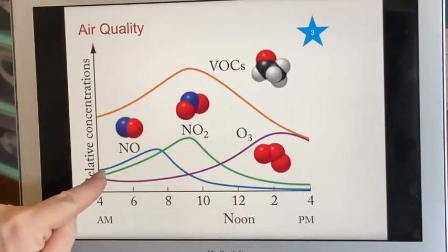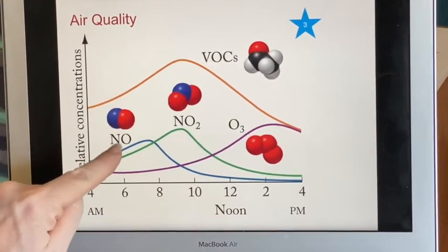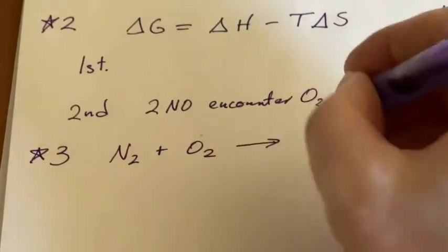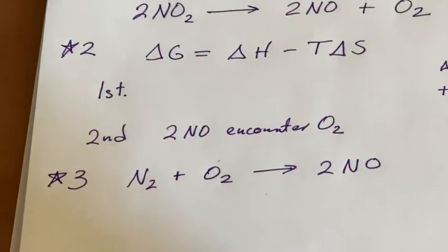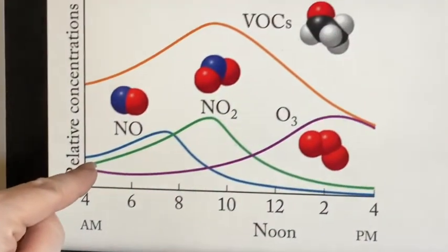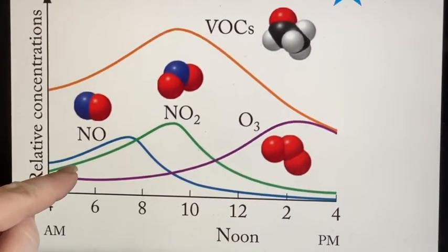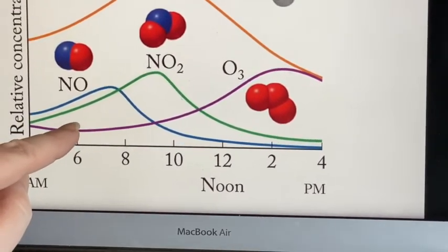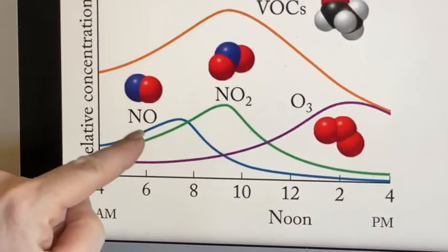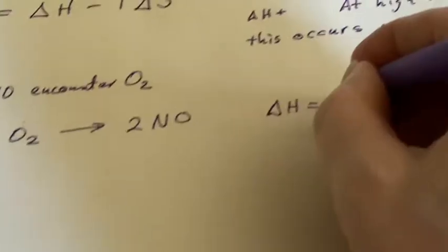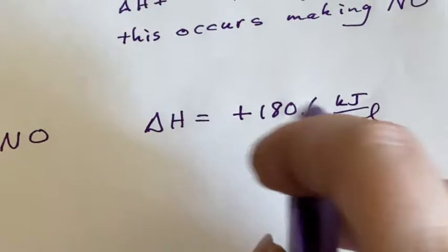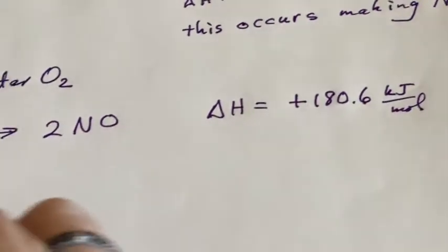So the very first one is the creation of the nitrogen monoxide. That was our first equation, where we were taking the nitrogen and the oxygen in the air and creating nitrogen monoxide. And this occurs because you have these hot car engines act as a surface that will transmit enough energy to the nitrogen and oxygen to make the nitrogen monoxide. Because remember, this one had a positive delta H, positive 180.6 kilojoules per mole. So in order for you to supply that energy, we can do that with a very hot engine.